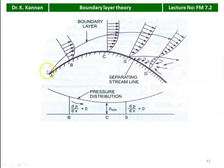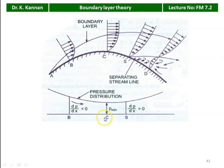Looking at the diagram: at point B, dp/dx < 0; at point C, pressure is minimum and dp/dx = 0; at point S, dp/dx > 0. When dp/dx > 0, the flow moves in the opposite direction and flow separation begins. Boundary layer separation means the fluid layer moves away from the surface — there is no physical contact between the fluid particle and the surface.